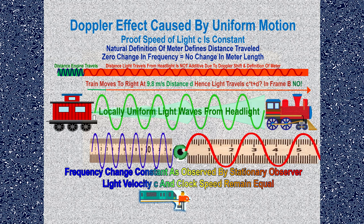Motion will cause a Doppler shift, which will change the length of the meter, and the result is that the velocity of c is constant. It's fixed. The constant c is the natural result of the fundamental definition of a meter — not a result of Einstein's theory as mythology claims. You now understand it clearly without help from Einstein.